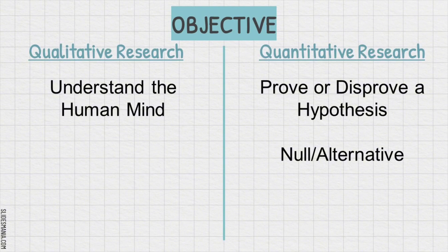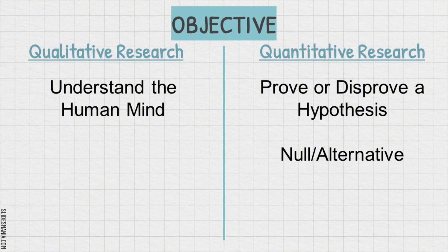Objective. Qualitative research aims to understand the human mind, whereas quantitative research aims to prove or disprove a hypothesis. Qualitative research has no connection to hypotheses. Its goal is to explore and gather detailed information or explanation about human behavior or the experiences of participants using their narratives and descriptions. In quantitative research, we have two hypotheses: the null hypothesis, which is a negative hypothesis that you want to prove wrong or untrue, and the alternative hypothesis, which is the researcher's hypothesis that they want to prove correct. The goal is to build and test hypotheses using collected numerical data, showing the relationships, effects, and influence of variables on each other.